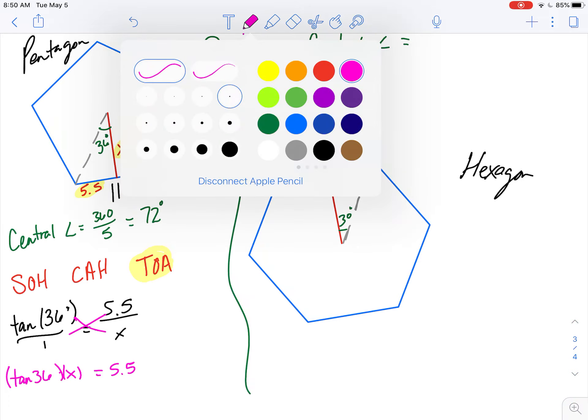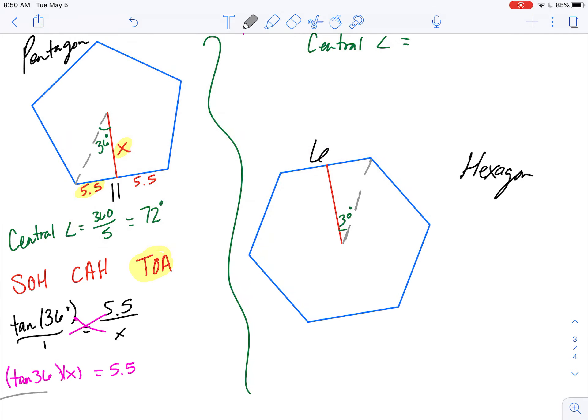So if I'm trying to solve for x, what do I need to get rid of on the left side there? I've got to get rid of the tangent of 36. Make sure you're in degree mode. Tangent of 36.